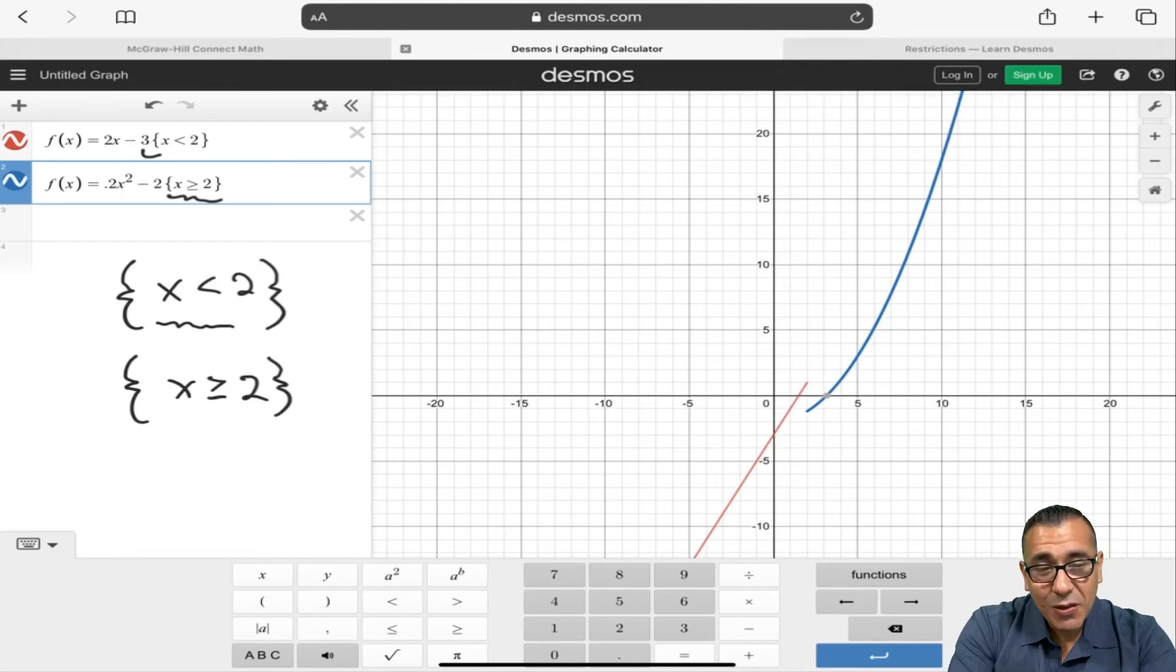So again, even if you had three parts or four parts of these piecewise functions, you would just tell it where to start and where to finish. And it's that easy. So just make sure you're comfortable with this set builder notation here, and that will do the trick.